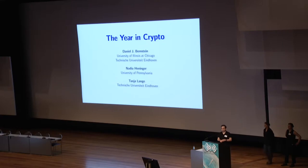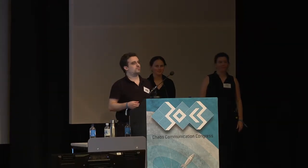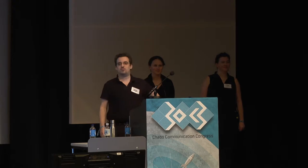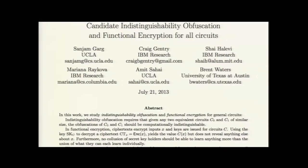Thanks for the nice welcome. A few weeks ago at the Asia Crypt conference, which happens every year, we asked a cryptographer: what do you think the most important thing that happened in crypto this year was? And he said, well, of course, the answer is obfuscation — and indistinguishability obfuscation based on multilinear maps.